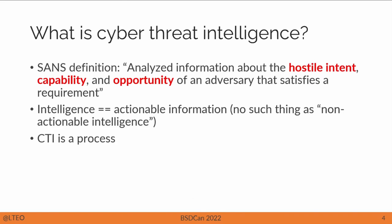So what is cyber threat intelligence? If you Google this phrase, you'll find all sorts of definitions, from very simple to very complex ones. In this presentation, I'll use the definition from SANS, which states that cyber threat intelligence is analyzed information about the hostile intent, capability, and opportunity of an adversary that satisfies a requirement. All three of those things have to be present for it to be considered intelligence. Intelligence is also actionable information — there is no such thing as non-actionable intelligence. Cyber threat intelligence is also a process, not just a finished product. It's not simply a blog post or a report or a threat feed — it is the entire process of generating intelligence.